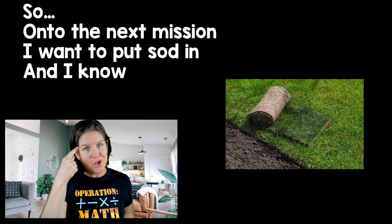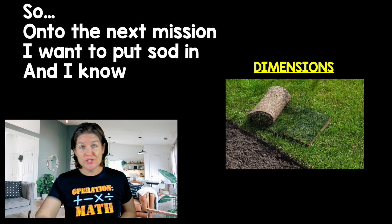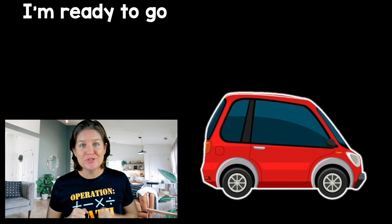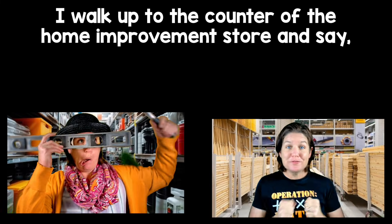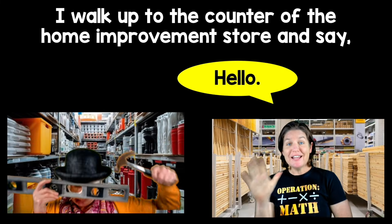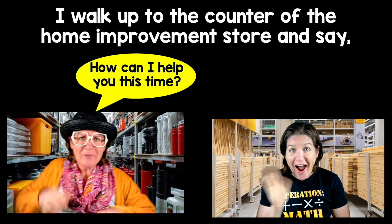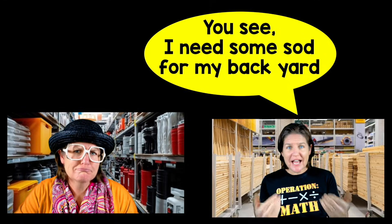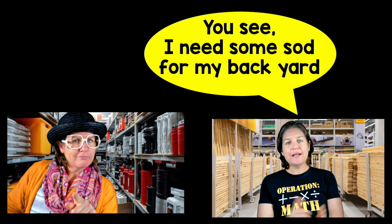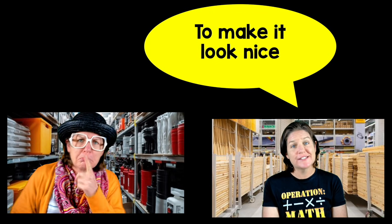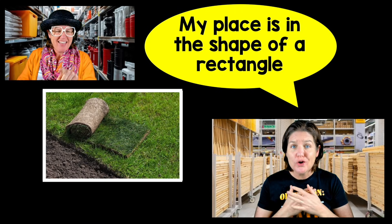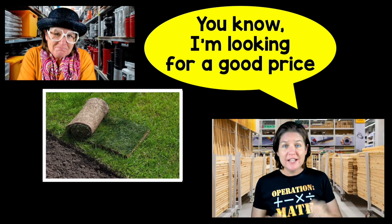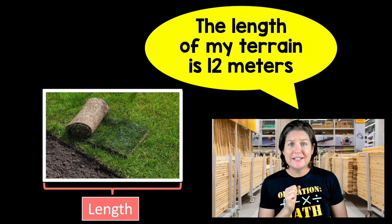I know the dimensions — the length and the width — I'm ready to go. I walk up to the counter at the home improvement store and say hello. 'Oh, you're back! Hello, how can I help you this time?' So I tell her: I need some sod for my backyard to make it look nice. My place is in the shape of a rectangle — I'm looking for a good price. The length of my terrain is 12 meters.